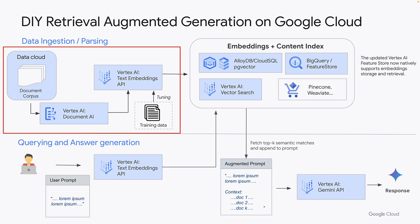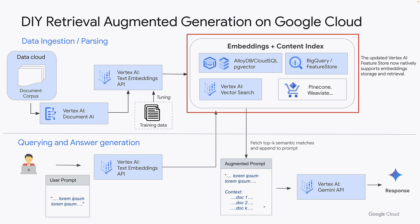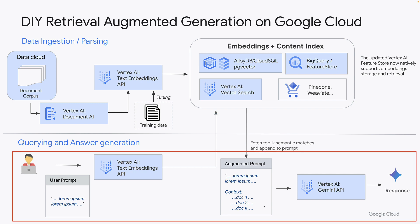You have a bunch of choices of vector databases: AlloyDB and Cloud SQL are Postgres databases that support the PG vector extension. Vector Search is a purpose-built vector database, formerly known as Matching Engine. Both BigQuery and Feature Store now support vectors as well. If you want to work with other vector databases like Pinecone or Weaviate, you'll find deployable solutions on the Google Cloud Marketplace. On the query and answer generation side, you can once again use the embeddings API and then one of the text foundation models, such as Gemini, to generate the response.